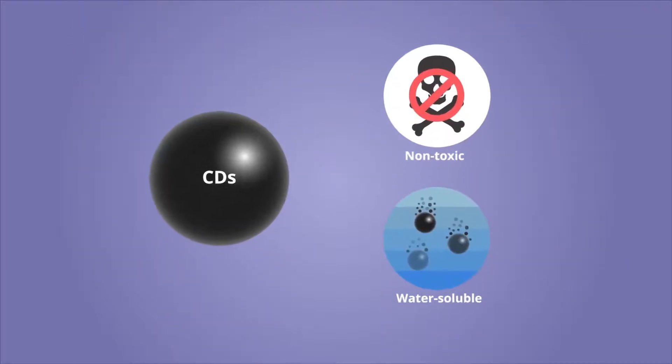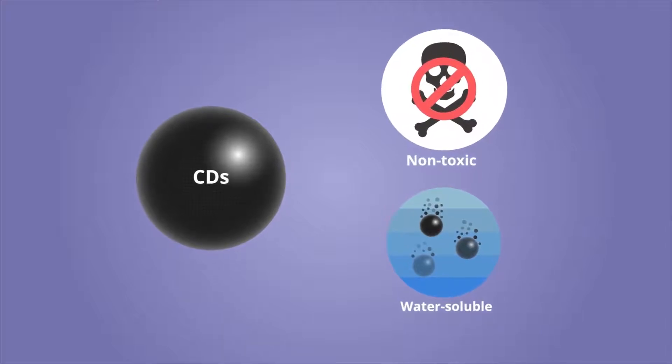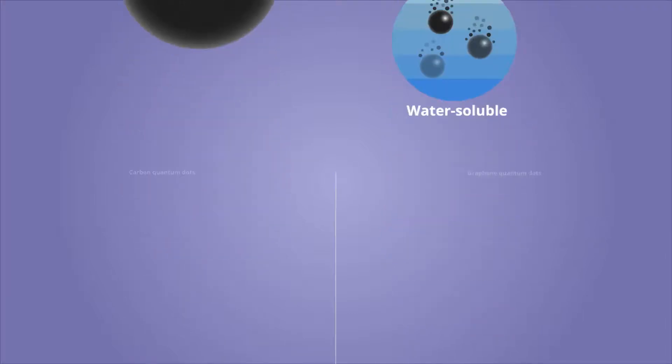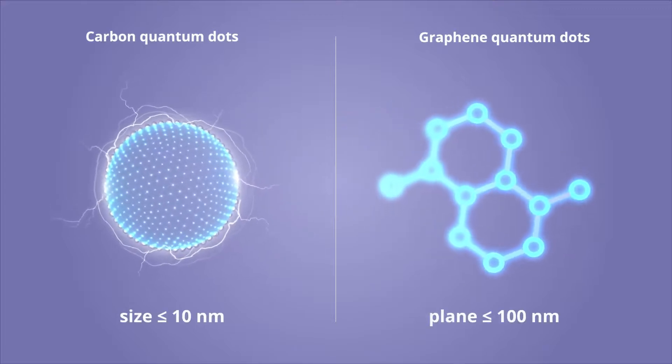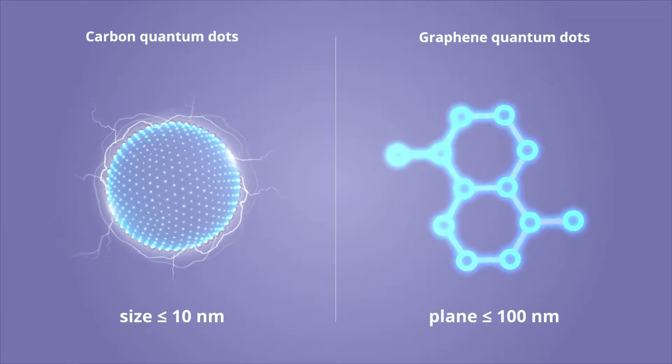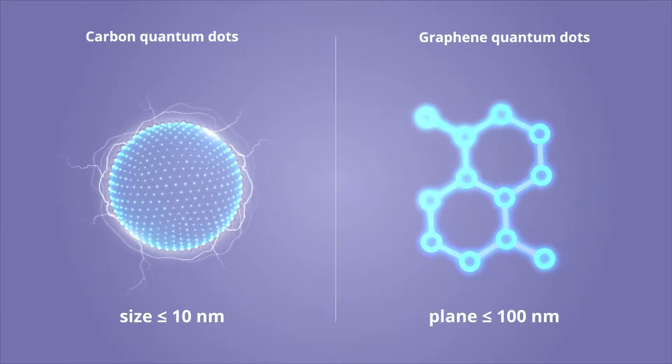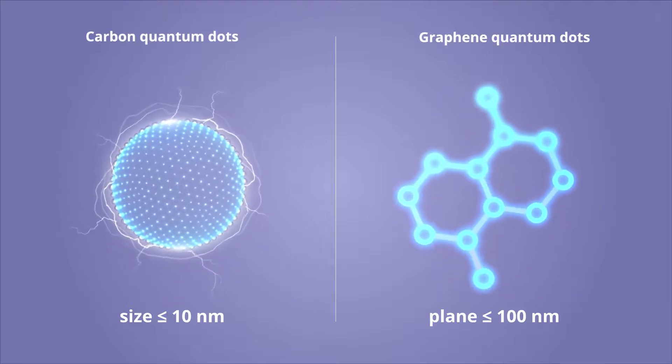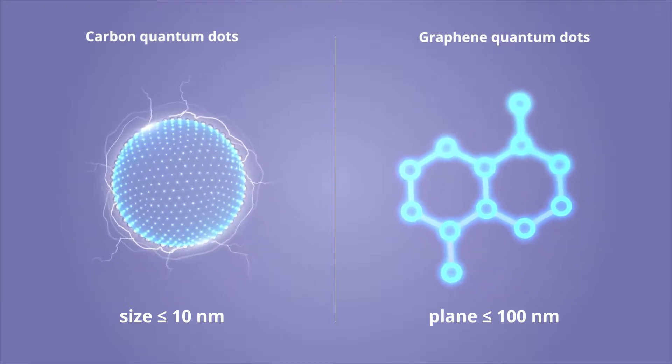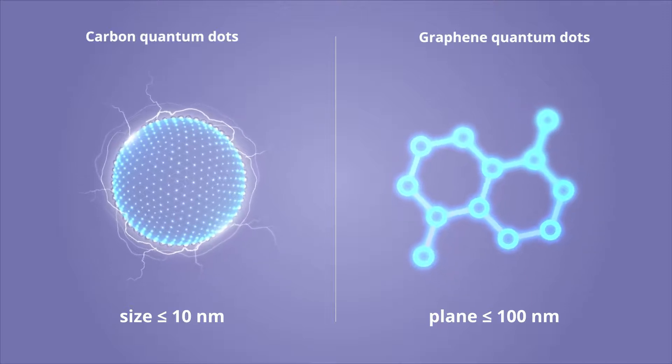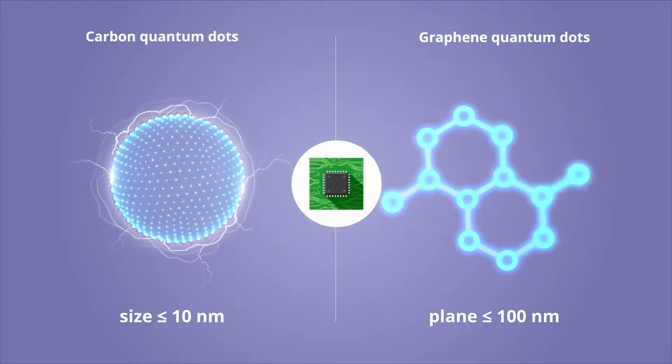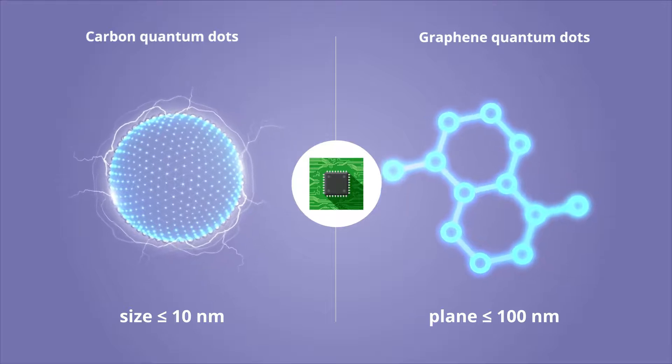The scientists found that the new technique produced non-toxic, water-soluble CDs. Moreover, these CDs were a mix of both carbon quantum dots, which are carbon dots of a size less than or equal to 10 nanometers, and graphene quantum dots, which are graphene nanosheets with a plane size of less than or equal to 100 nanometers. Both have excellent optical and electronic properties for semiconductor applications.